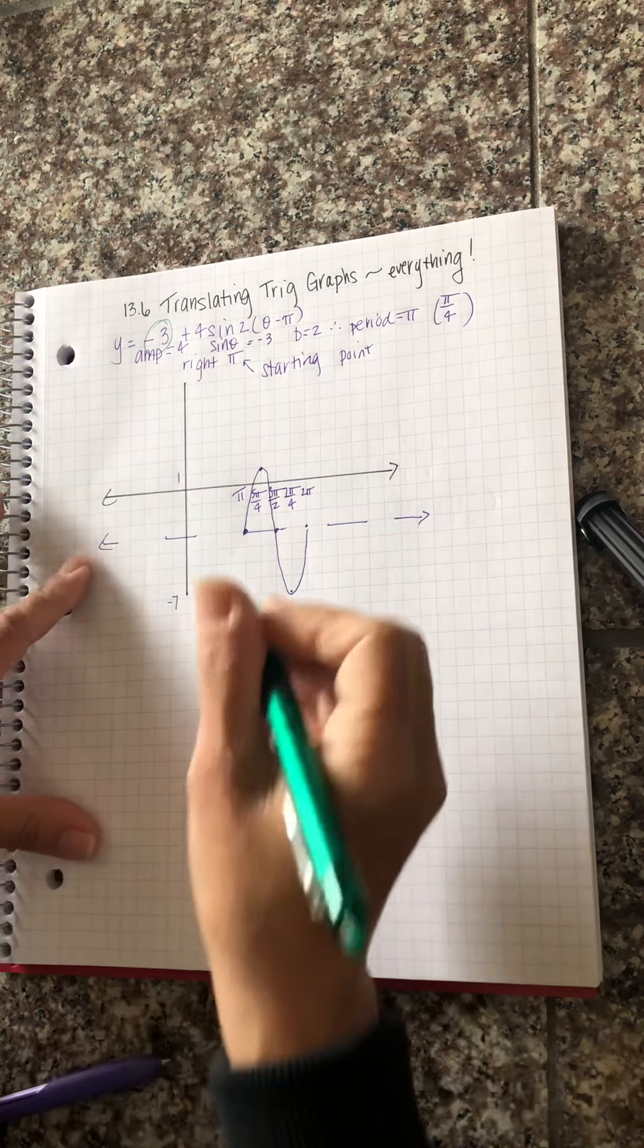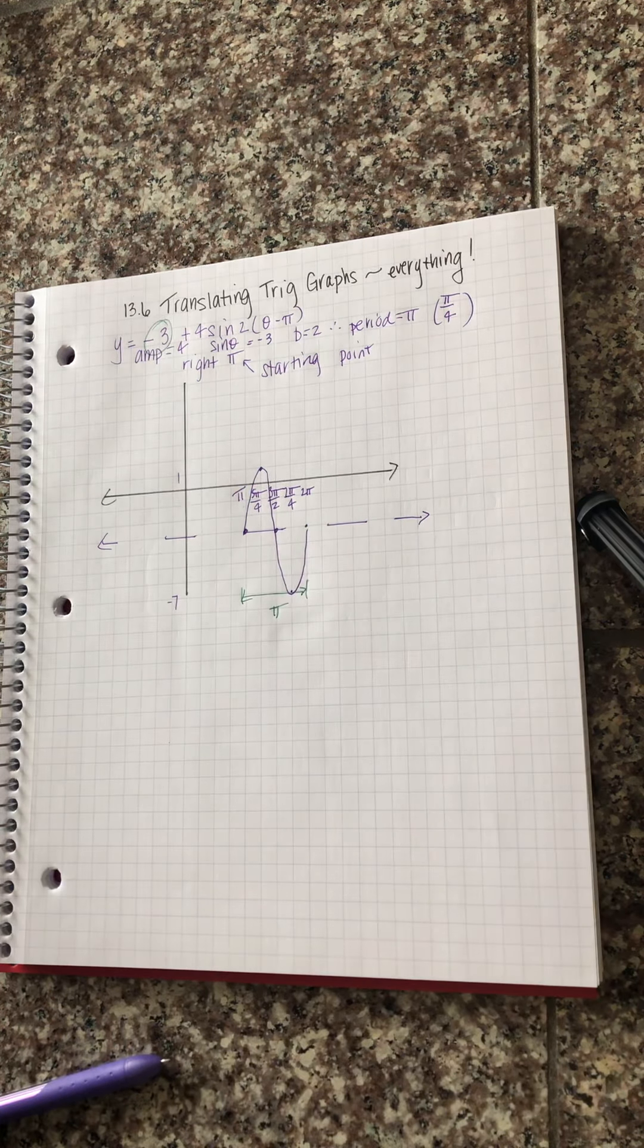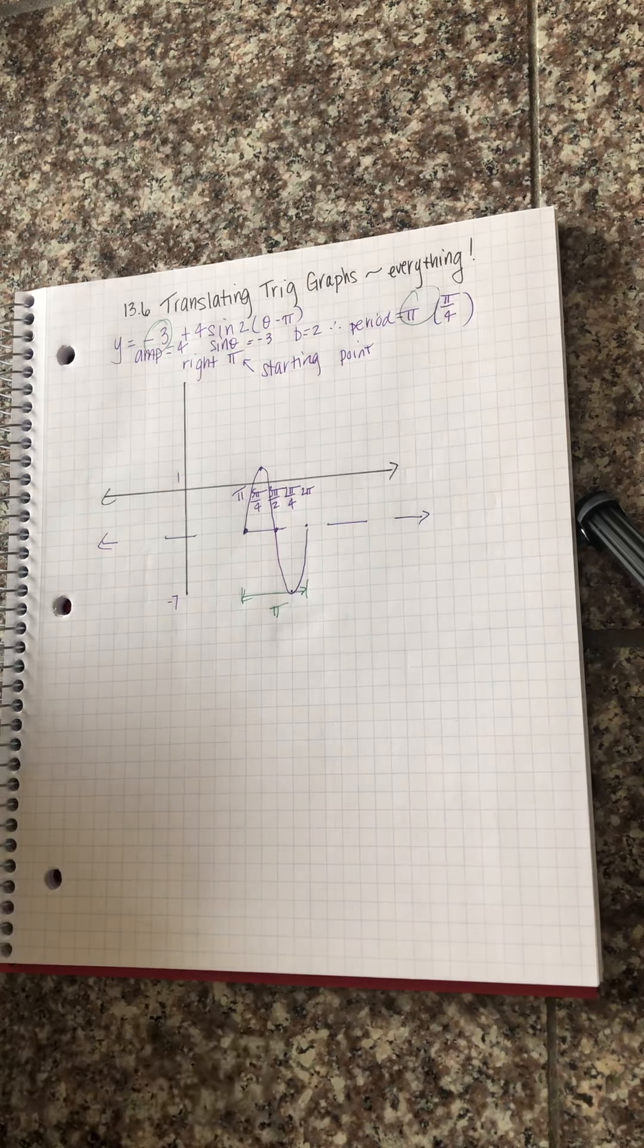Let's just do a quick check. Pi to two pi is pi which is what we said it should be. The length of the wave is pi.